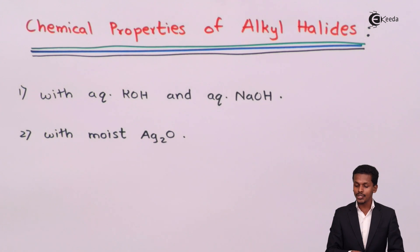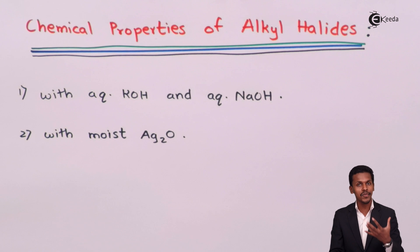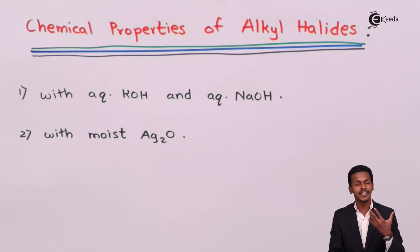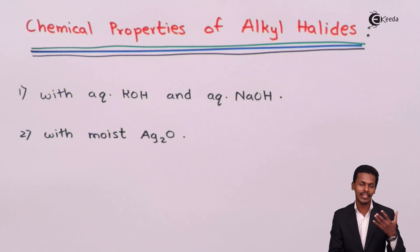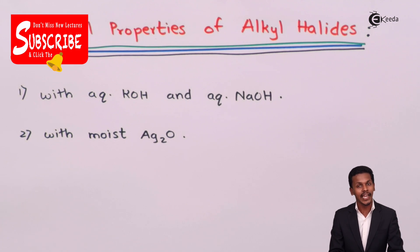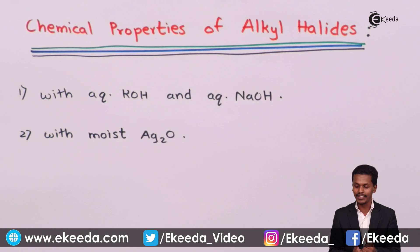The second reaction is of the alkyl halide with moist Ag2O, or silver oxide. It is again a substitution reaction. Moist Ag2O reacts with water to produce AgOH, and this AgOH is responsible for giving us an alcohol when it is treated with an alkyl halide.